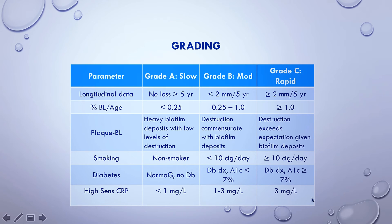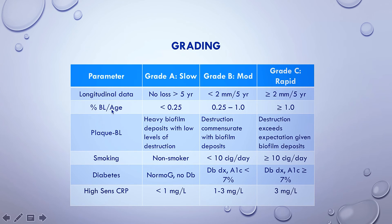You can also consider smoking and diabetes as grade modifiers. CRP, a marker for inflammation, is less practical to use. The more information you have, the easier it is to determine a grade. The purpose of grading is to predict disease progression. For example, if percent bone loss over age is less than 0.25 but the patient smokes more than 10 cigarettes a day, you would still classify them as Grade C, because smoking significantly increases the rate of disease progression.